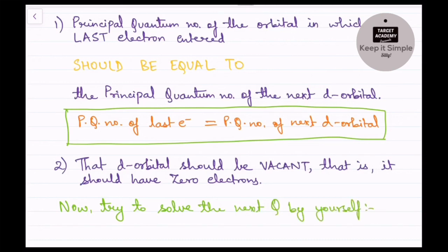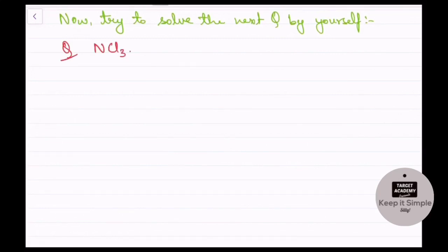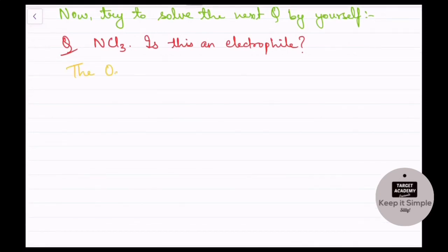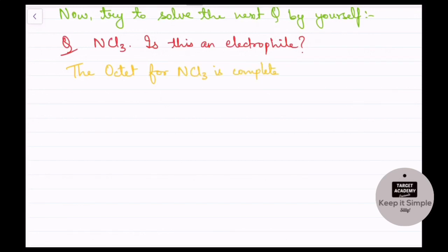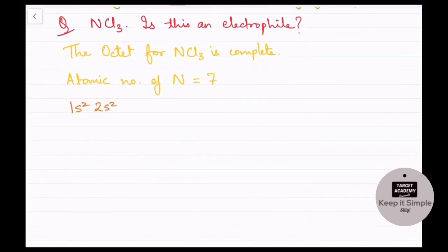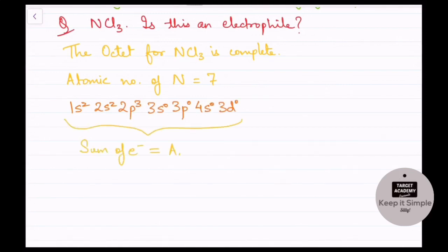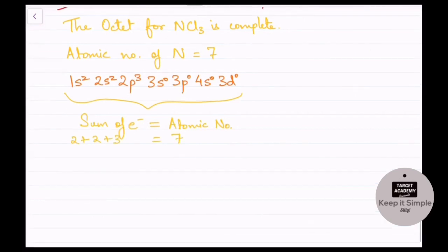Now the second example — try to solve this yourself: Is NCl3 an electrophile? The octet for NCl3 is complete because nitrogen has five electrons in its outermost shell and takes three electrons from chlorine. The atomic number of nitrogen is 7, so the electronic configuration is 1s2 2s2 2p3 3s0 3p0 4s0 3d0. The sum of electrons: 2 + 2 + 3 = 7, which equals the atomic number.